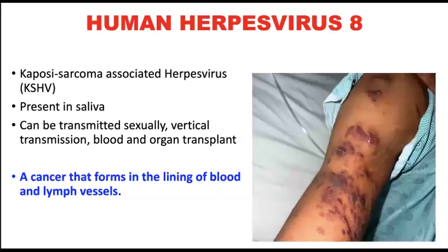HHV-8, or Kaposi's sarcoma-associated herpes virus, is commonly found in saliva. It is transmitted through sexual contact, vertical transmission, blood donation, exchange of blood or blood-contaminated materials, or organ transplantation.